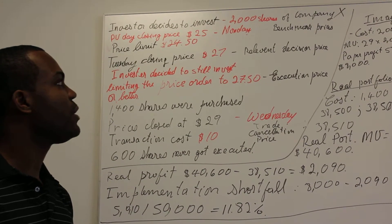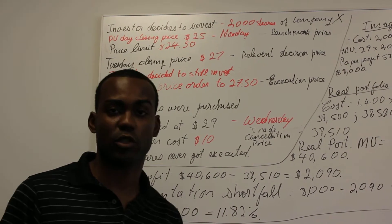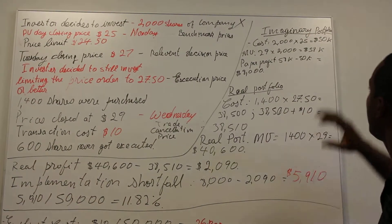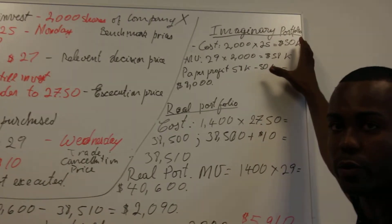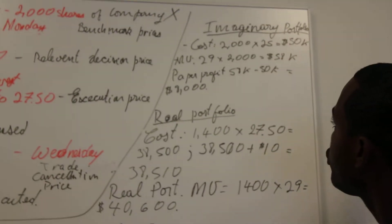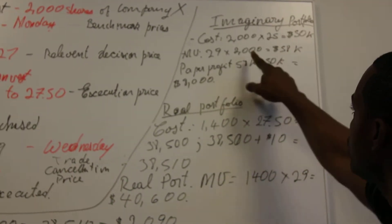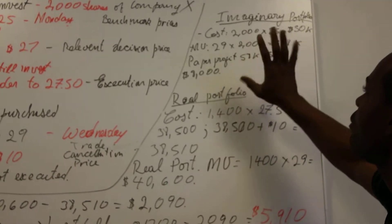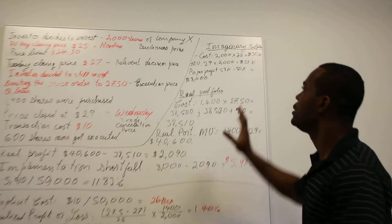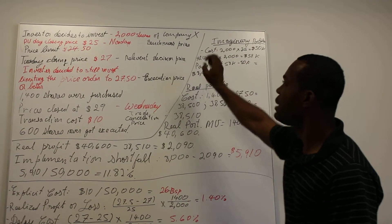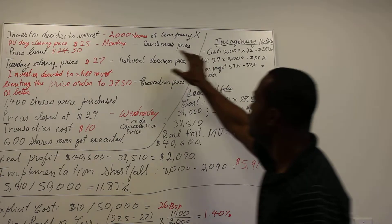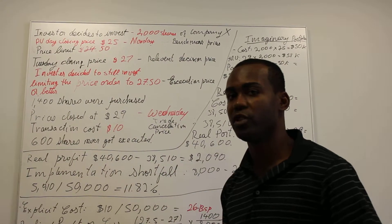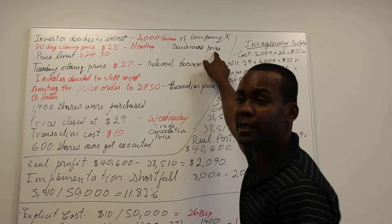To measure those implicit costs, we do an implementation shortfall analysis, which begins by using what's called an imaginary portfolio. For the imaginary portfolio, we assume that all 2,000 shares were purchased at $25 — the Monday night closing price, which we call the benchmark price.